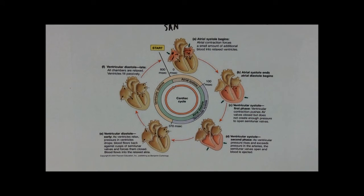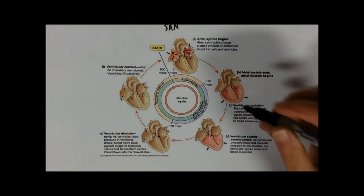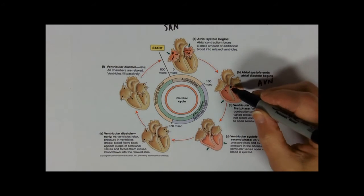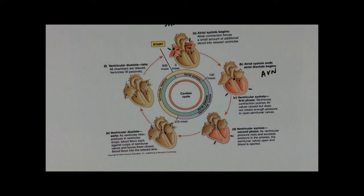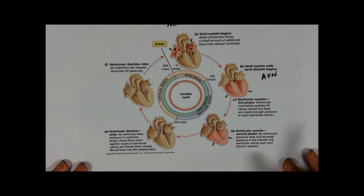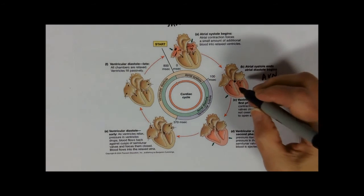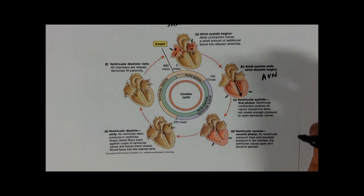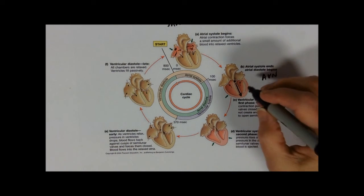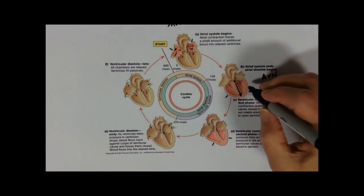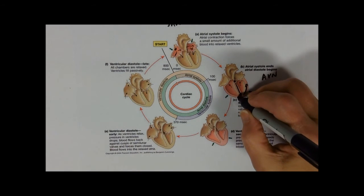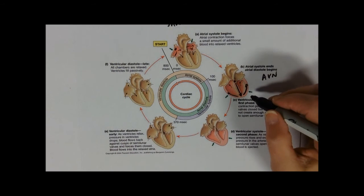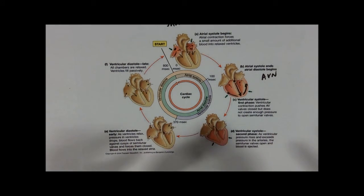That wave of excitation is collected into the atrioventricular node at the top of the septum, lying directly between the atria and ventricles. The atrioventricular node then sends that wave of excitation right down to the base of the heart — to the apex — via the bundle of His, so that the heart contracts from the bottom. It then spreads up the sides on each side, right and left together, and begins ventricular contraction.